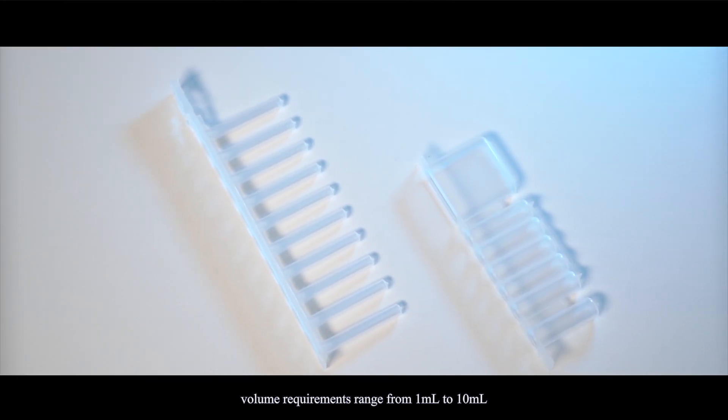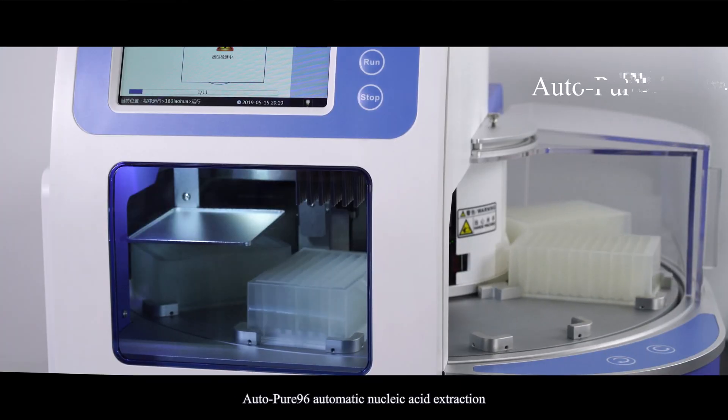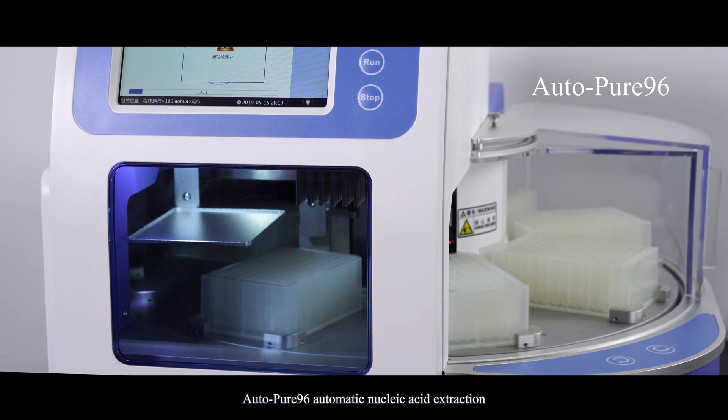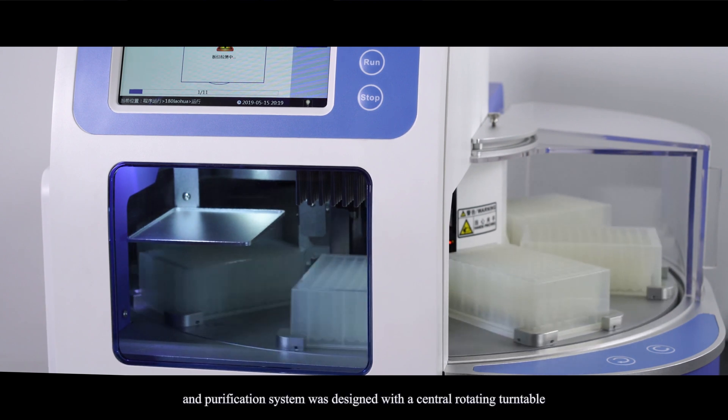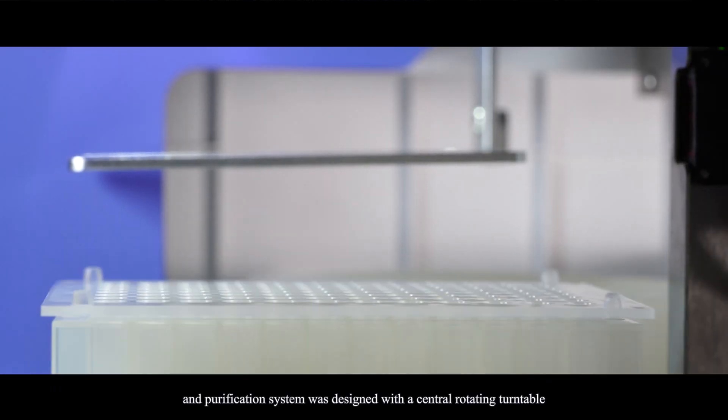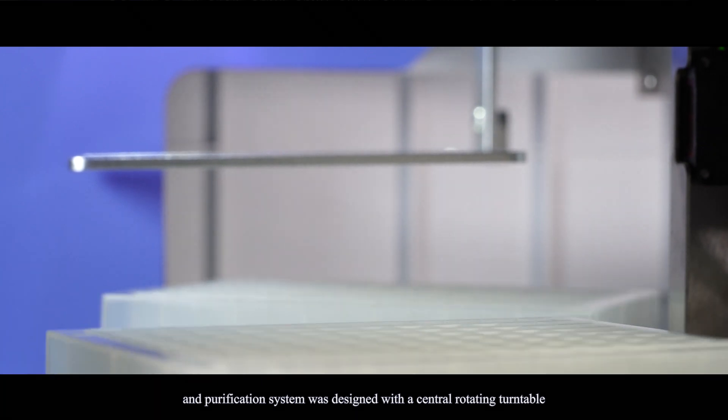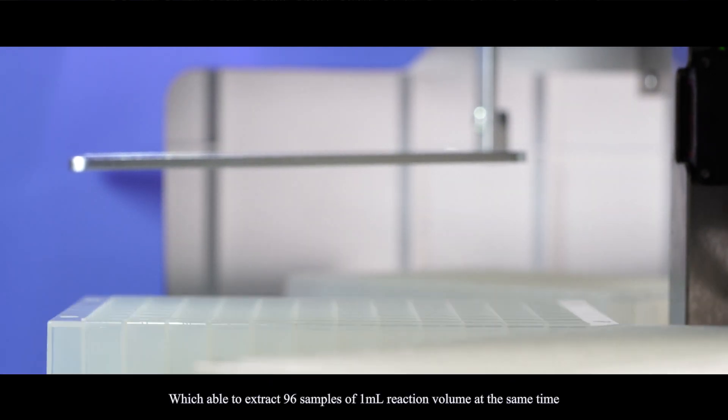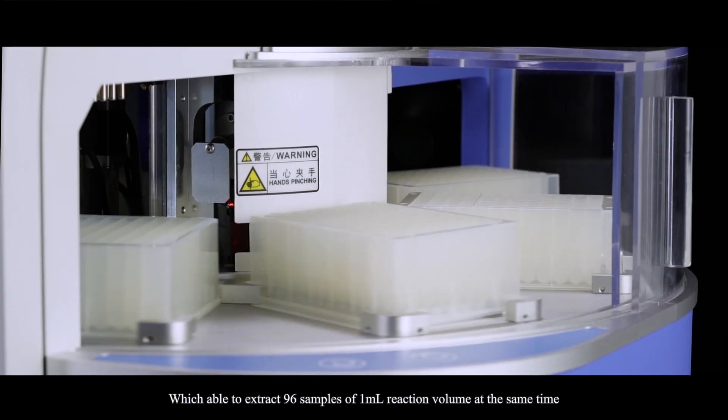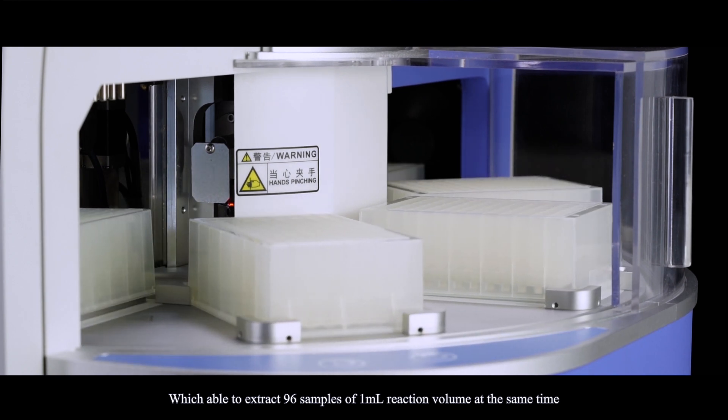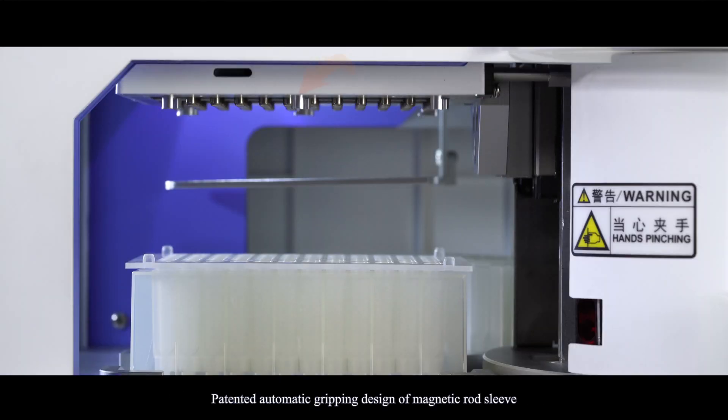Auto Pure 96 automatic nucleic acid extraction and purification system was designed with a central rotating turntable which is able to extract 96 samples of 1 milliliter reaction volume at the same time. Patented automatic gripping design of magnetic rod sleeve has achieved 99.99% success rate in 30,000 grabbing experiments.